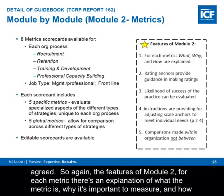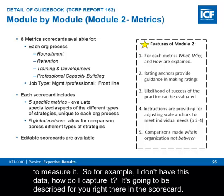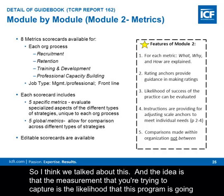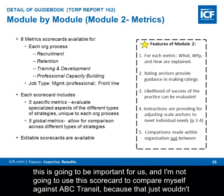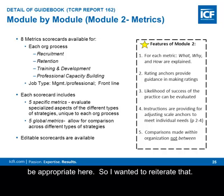We gathered data and vetted the two scorecard distinctions with our participants and they agreed. For each metric in Module 2, there's an explanation of what the metric is, why it's important to measure, and how to measure it. If you don't have the data, it'll be described right there in the scorecard how to capture it. The measurement is trying to capture the likelihood that a program is going to be successful for your organization — not how you measure up to somebody else. You wouldn't use the scorecard to compare yourself against another transit system, as that wouldn't be appropriate here.